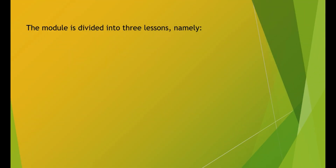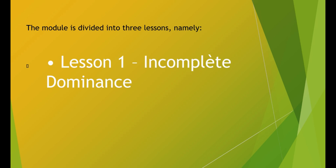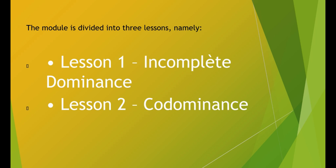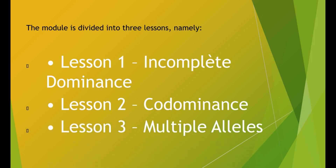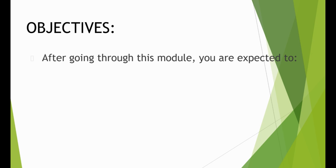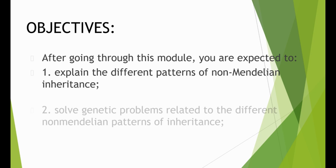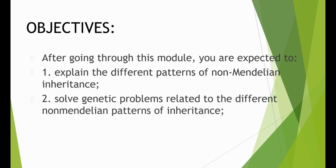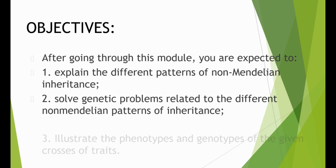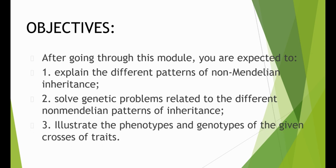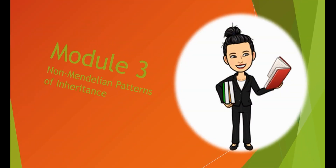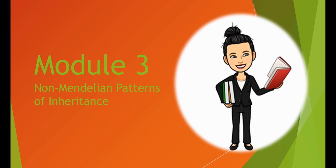This module is divided into three lessons: Lesson 1, Incomplete Dominance; Lesson 2, Co-Dominance; and Lesson 3, Multiple Alleles. After going through this module, you're expected to explain the different patterns of non-Mendelian inheritance, solve genetic problems related to the different non-Mendelian patterns of inheritance, and illustrate the phenotypes and genotypes of the different causes of traits. With that, let's talk about Module 3: Non-Mendelian Patterns of Inheritance.